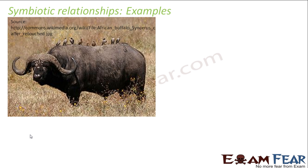The first example is the buffalo and the crow. On the body of the buffalo, there are small insects and creatures present. When the crow sits on the buffalo, it starts eating those insects, helping the buffalo get rid of them — so the buffalo is benefited. The crow also gets benefited because it gets something to eat. So this is a symbiotic relationship where both are benefited.